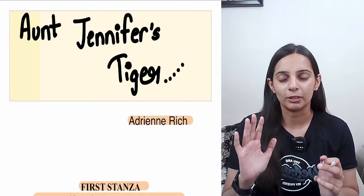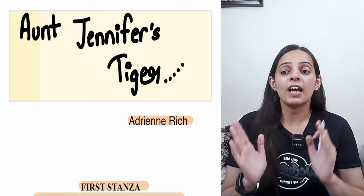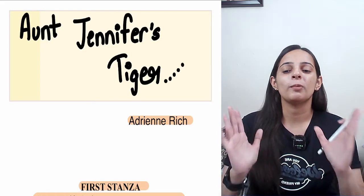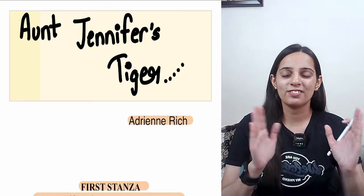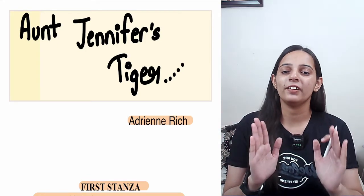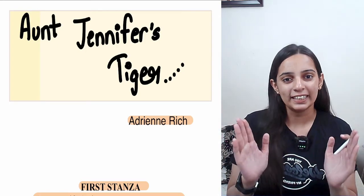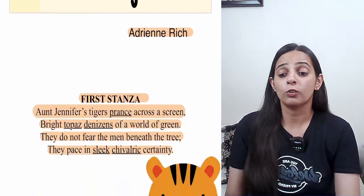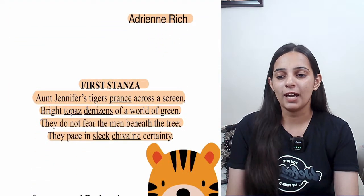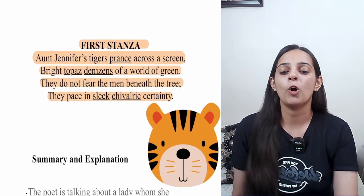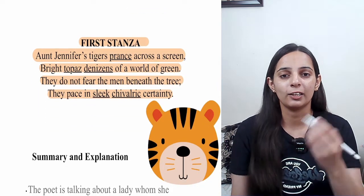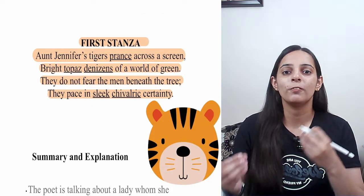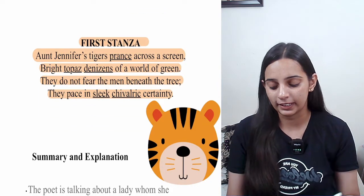Now let's start our poem, Aunt Jennifer's Tiger by Adrienne Rich, without any delay. We come to the first stanza. Let's look at the first stanza.